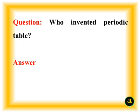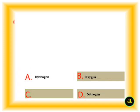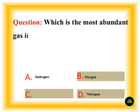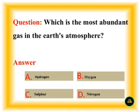Who invented the periodic table? Which is the most abundant gas in the Earth's atmosphere? Answer: Nitrogen.